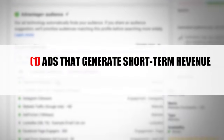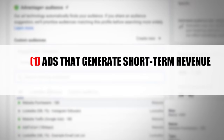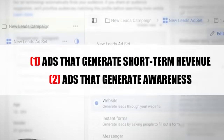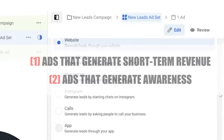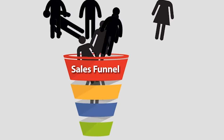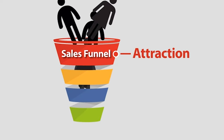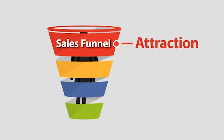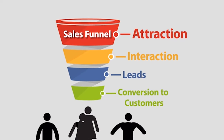So far, I've simplified digital advertising into basically two types: one, ads that generate short-term revenue, and two, ads that generate awareness. But a full funnel campaign promotes or sells six different things, not just two different things.